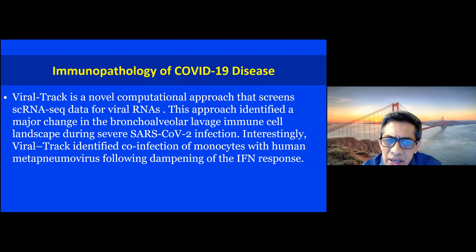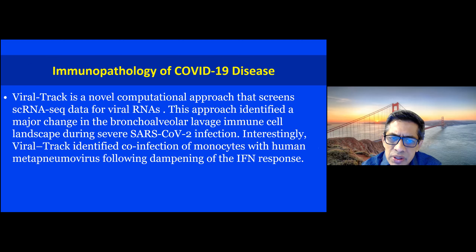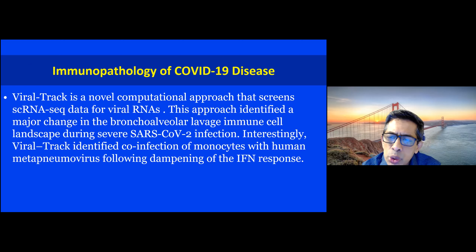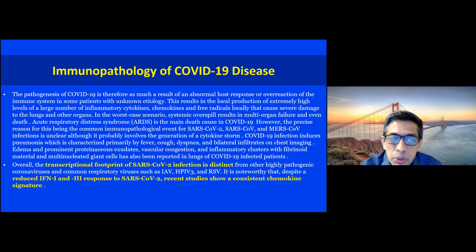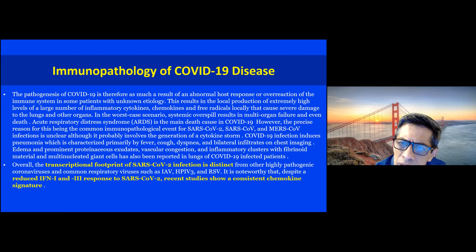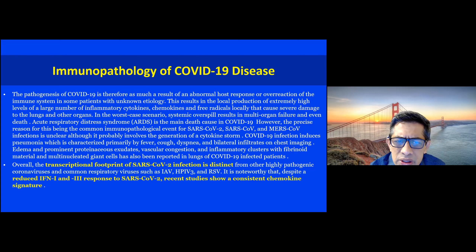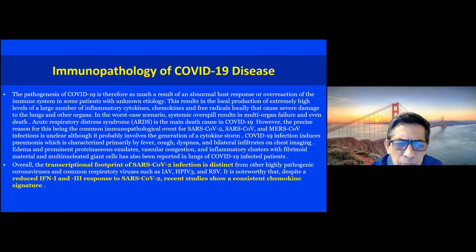A novel computational approach screening various RNA sequences of the virus has shown a major change in the bronchial alveolar lavage immune cell landscape during severe SARS-CoV-2 infection. Such lavages have yielded viral track co-infections of monocytes within human metapneumovirus following the dampening of the interferon response. We now know better about the immunopathology of COVID — the abnormal host response or overreaction of various inflammatory cytokines leads to a transcriptional footprint of SARS-CoV-2 infection which is distinct from highly pathogenic coronaviruses.